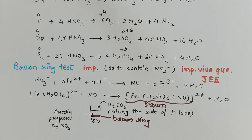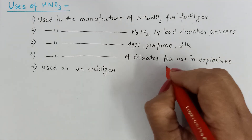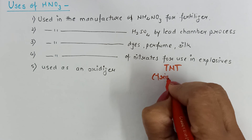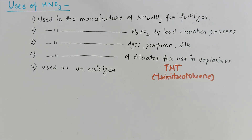Nitric acid is one of the most widely used chemicals in industry. It is used in the manufacture of ammonium nitrate for fertilizers, in the manufacture of H2SO4 by the lead chamber process, and in the manufacture of dyes, perfumes, silk, as well as nitrates for explosives like TNT (trinitrotoluene). Being a strong oxidizing agent, it is also used as an oxidizer.